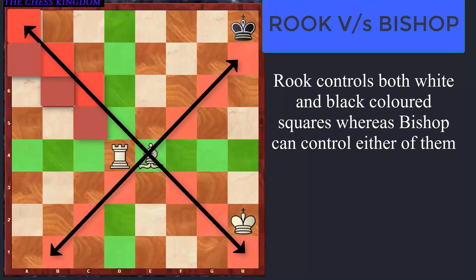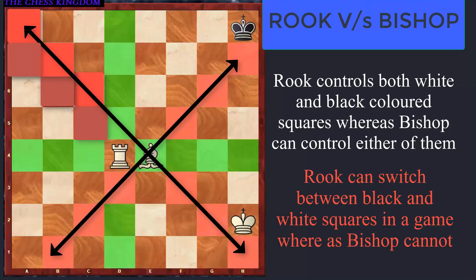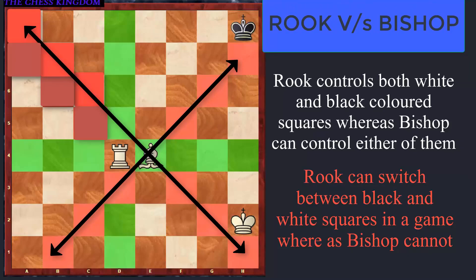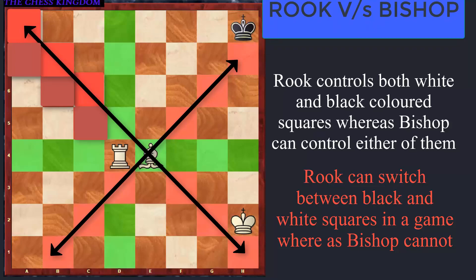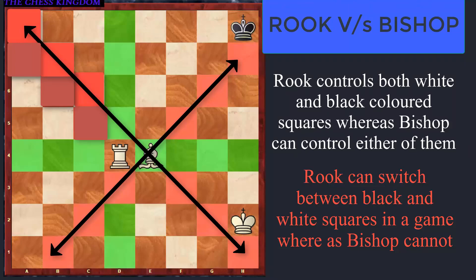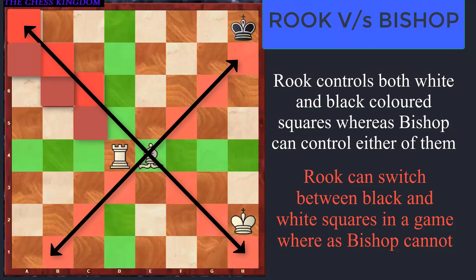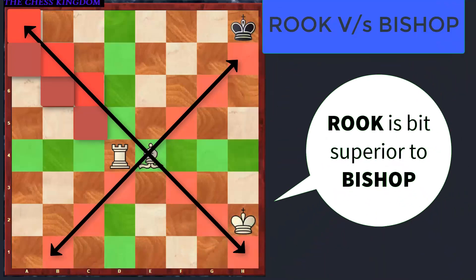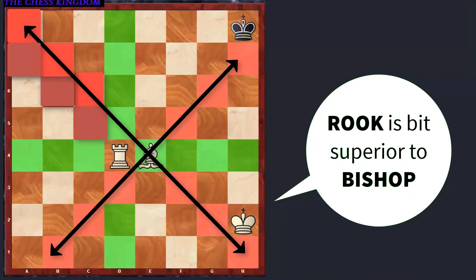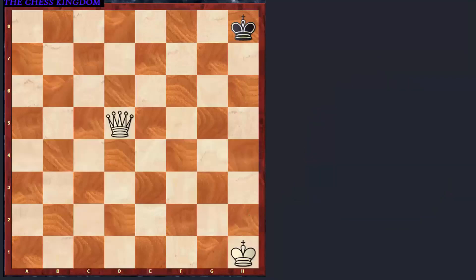In other words, a Rook in a particular game can switch the colors of the squares it occupies, whereas the Bishop cannot. And that is the main reason why the Rook is considered to be a more significant piece than the Bishop.